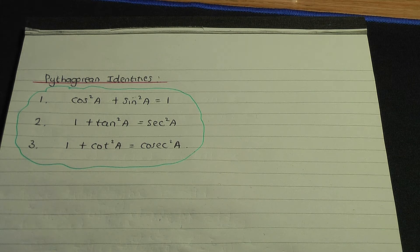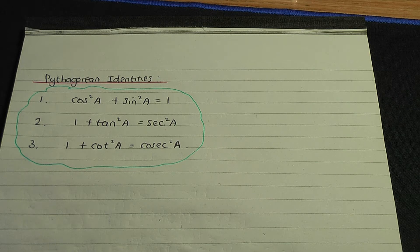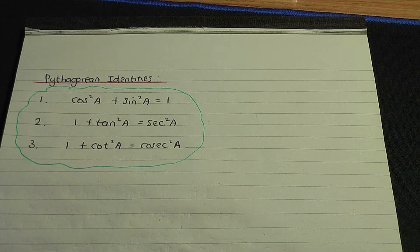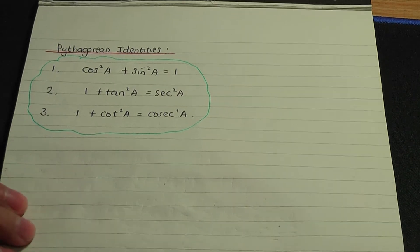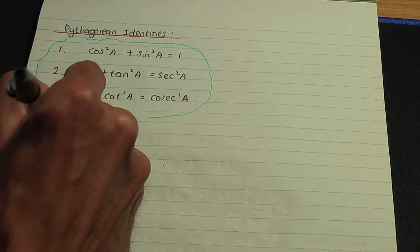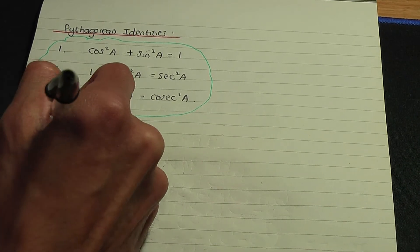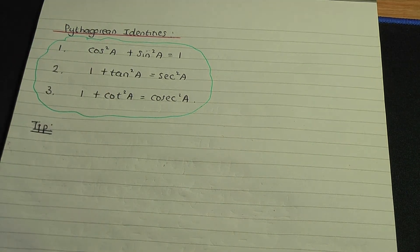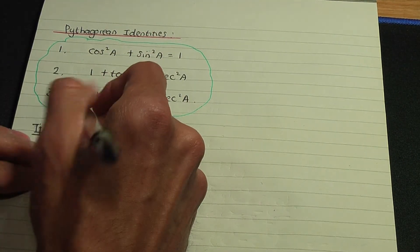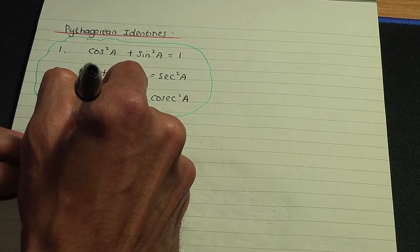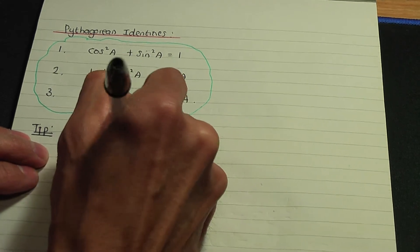Here's a tip: whenever you have a squared term — a square of a trigonometric ratio appearing in an equation — nine times out of ten you may need to use the Pythagorean identities.